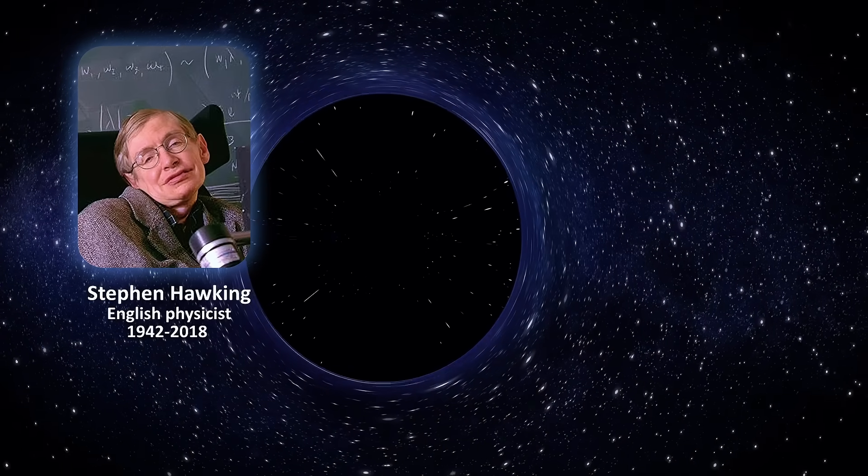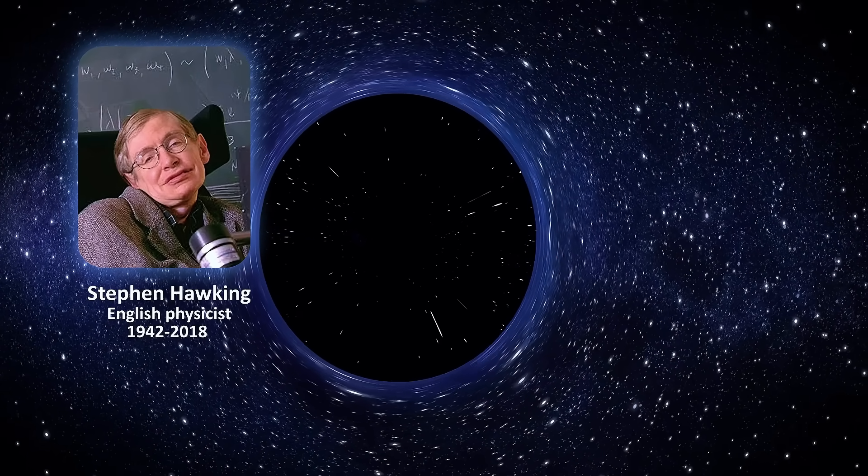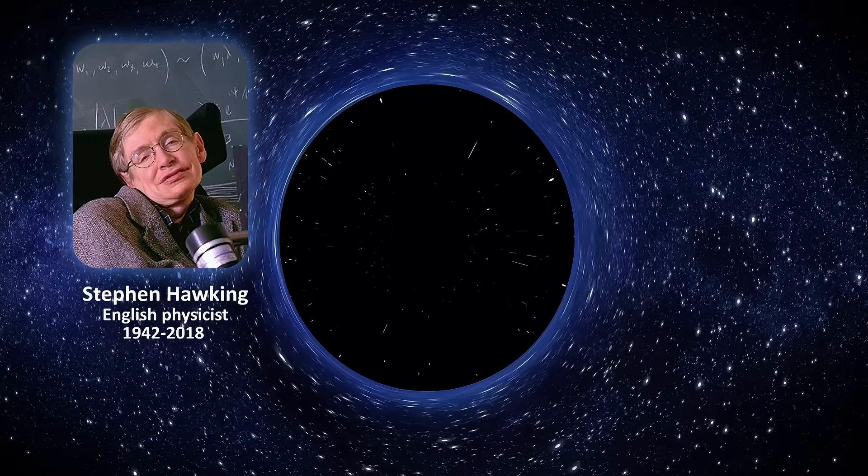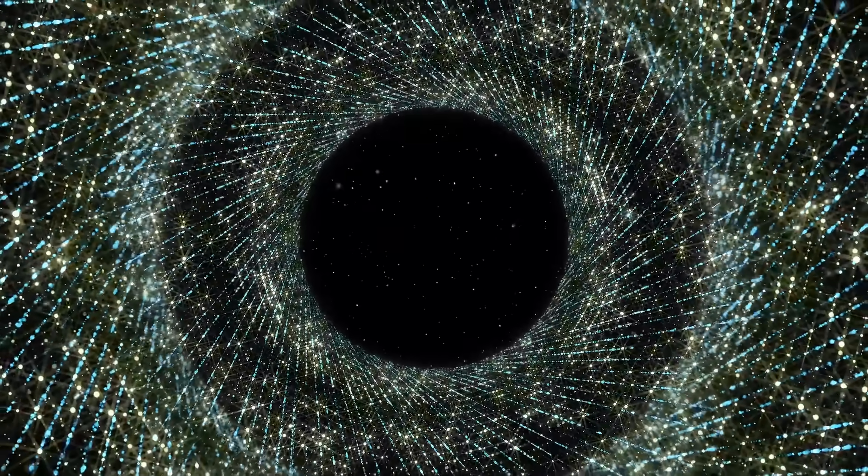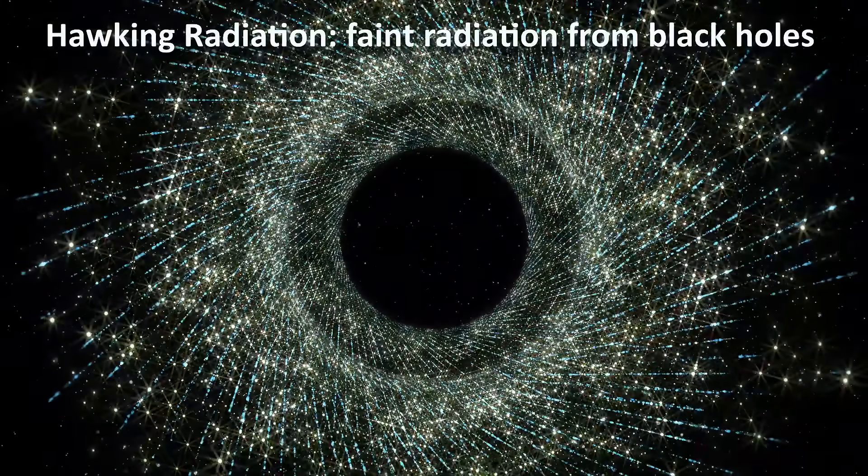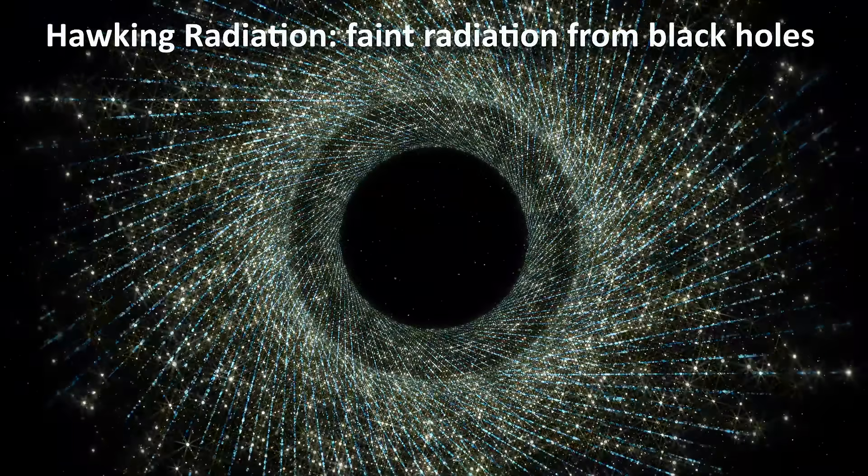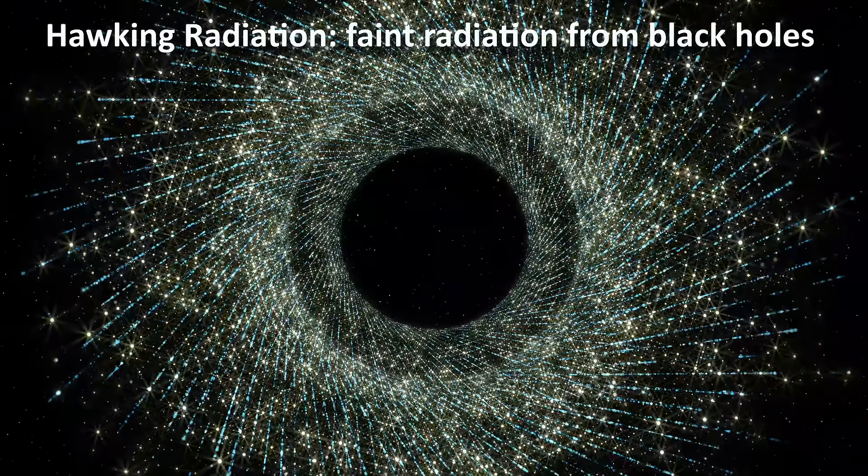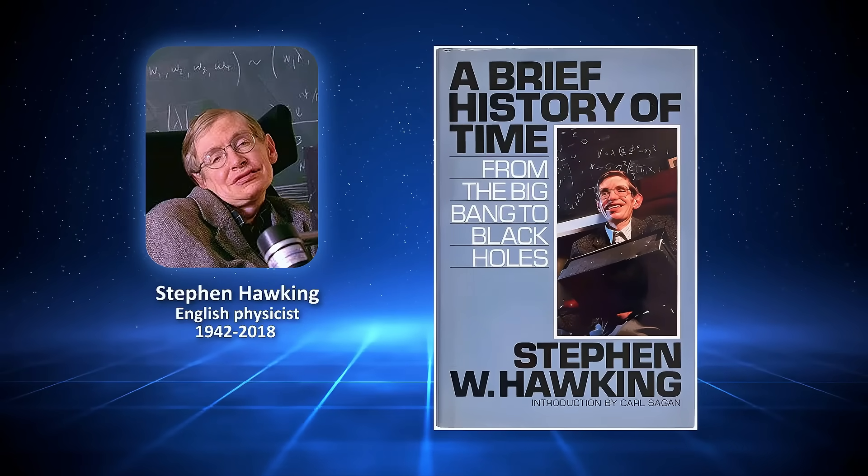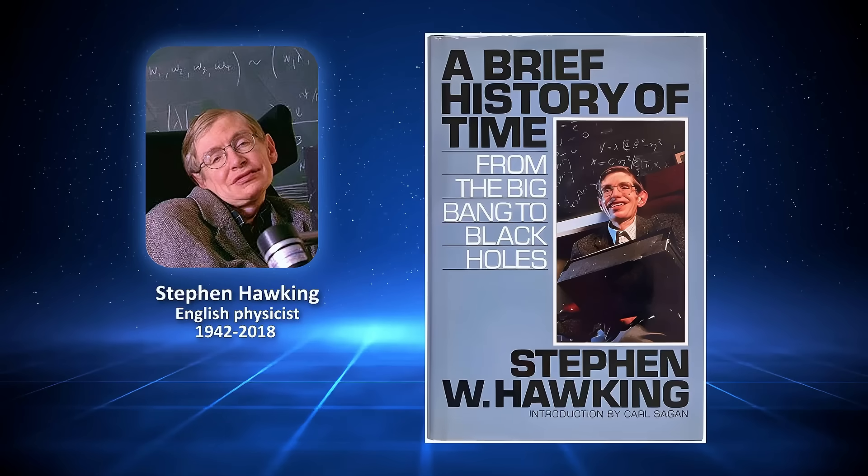When Stephen Hawking first proposed his theory of black holes emitting radiation in 1975, it was a monumental breakthrough. Hawking radiation, as it came to be known, suggested that black holes are not completely black. In fact, they emit faint radiation consisting of photons and potentially neutrinos and other particles. But what if I told you that even Hawking's own book didn't accurately describe what's really going on?